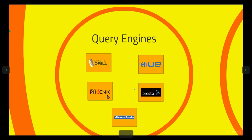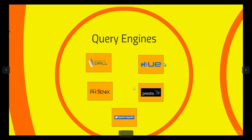Next is Presto — it's not Apache Presto, just Presto. It's similar to Apache Drill but it was developed by Facebook and is now open source. Presto is mainly meant to connect to Cassandra, while Apache Drill cannot connect to Cassandra. However, Presto cannot connect to MongoDB.